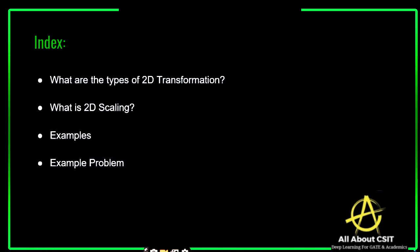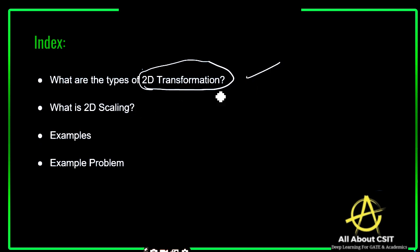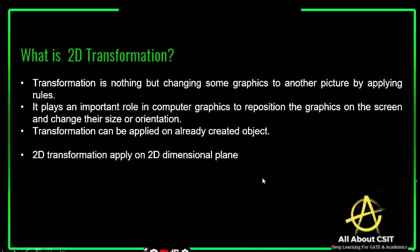Let's see what topics we are going to discuss in this video. We'll cover what exactly 2D transformation is, the different types of 2D transformations, and what is 2D scaling. The types include translation, scaling, shearing, reflection, and rotation. We will focus on the scaling concept with examples, and finally work out an exam problem so you get complete clarity on 2D scaling.